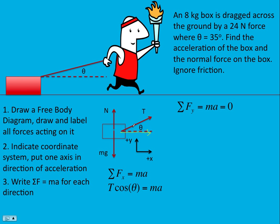Then in the y direction, sum of the forces equals ma. Well, there's no acceleration in the y direction. The box is not losing contact with the ground and it's not going up. In the y direction we have three forces: we have the normal force, we have the opposite side of this triangle, the upward component of the tension T sin(θ), and then we have gravity acting down. So those three together have to add up to zero.